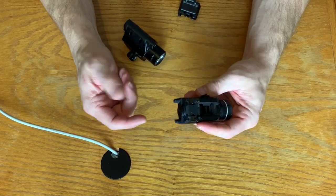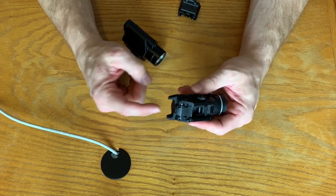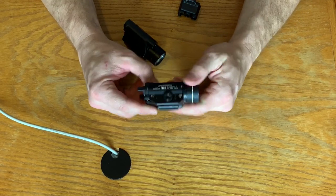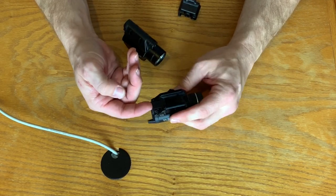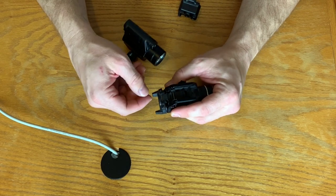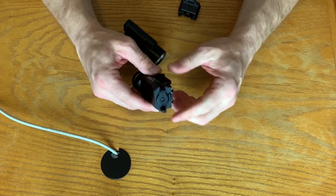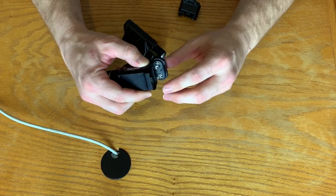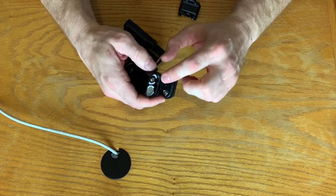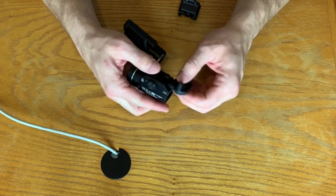Alrighty guys, let's get to work. I'm going to take this battery door off my TLR1 HL. So what I'm going to do is I'm going to flip up this little lever right here and that pops the battery door out. And then it's got a little latch that kind of grabs the bottom of the light.